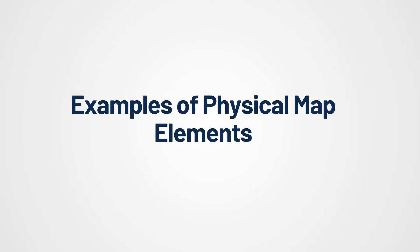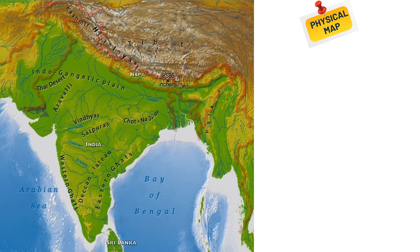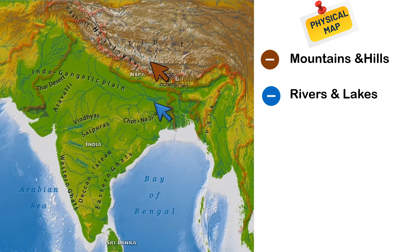Let's focus on some examples of physical map elements. First element: mountains and hills, represented with shades of brown or tan and labeled with their names and elevations. Second element: rivers and lakes, shown in blue, with major rivers often labeled along their course and significant lakes marked and named.